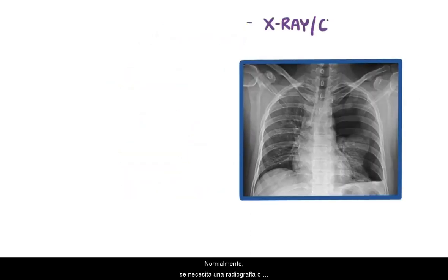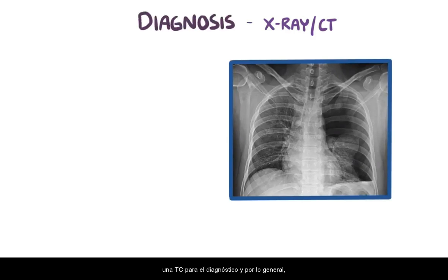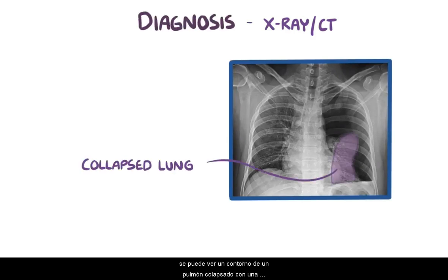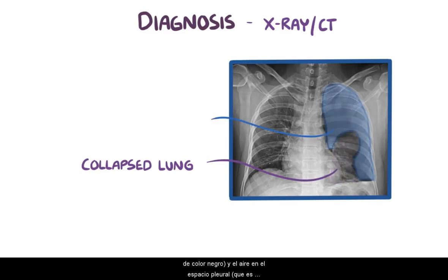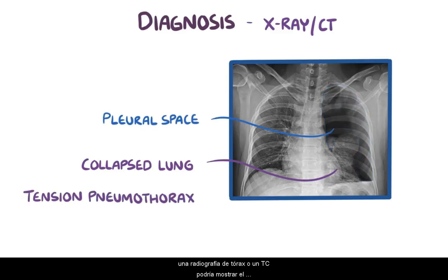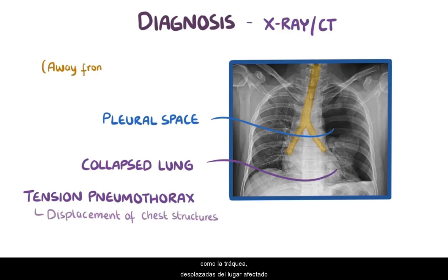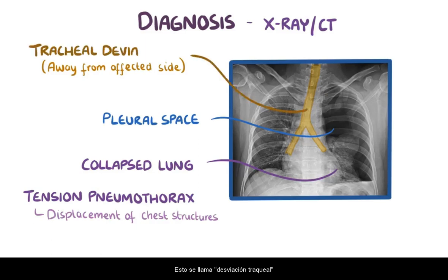Typically, an X-ray or CT is needed for diagnosis, and usually an outline of the collapsed lung can be seen, with a distinct difference between the lung tissue — which is mostly black — and the air in the pleural space, which is completely black. If there's a tension pneumothorax, an X-ray or CT might show displacement of chest structures like the trachea away from the affected side. This is called tracheal deviation.